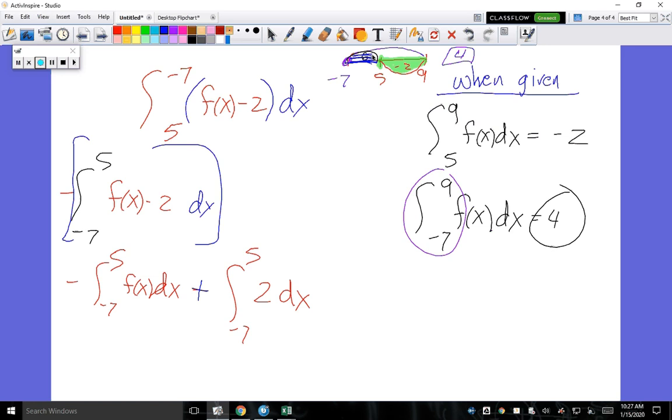So we know that this is equal to what? 6. But there's a negative out in front. Negative mistakes are huge in this unit, okay? They're bad.